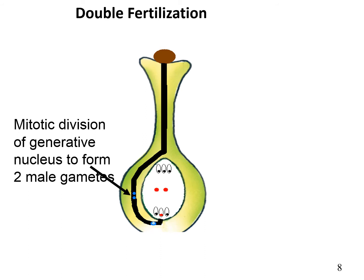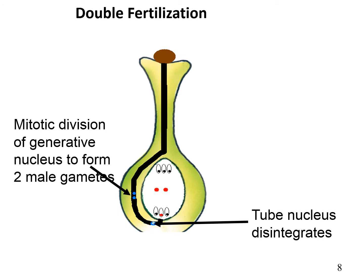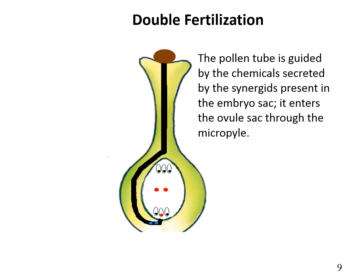Meiotic division of the generative nucleus forms 2 male gametes, meaning 2 sperm. At this stage, the tube nucleus disintegrates. The pollen tube is guided by chemicals secreted by the synergids, which are present in the embryo sac. It enters the ovule through the micropyle.